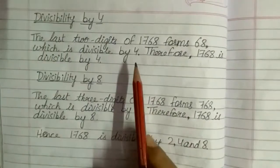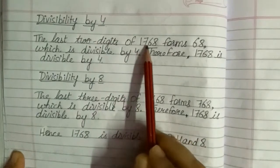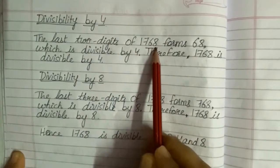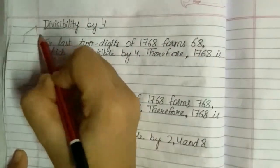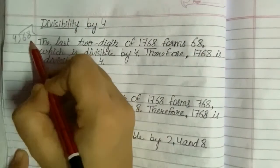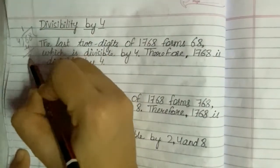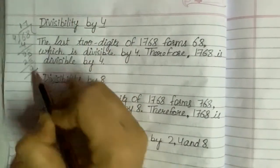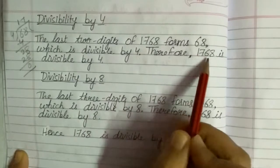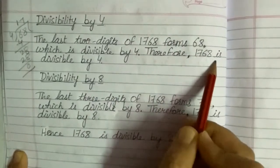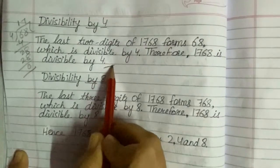Next we will check its divisibility by 4. Here in 1768, the last two digits form 68. We will divide 68 by 4, and on dividing, I get a remainder of 0. That means 68 is divisible by 4. Therefore, 1768 is divisible by 4.